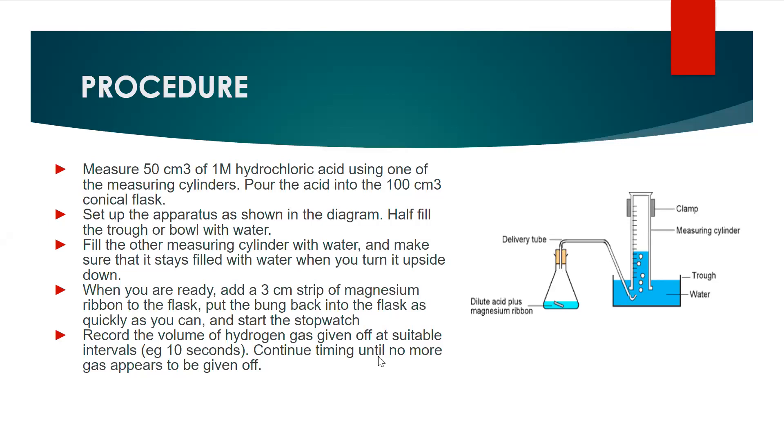Procedure: first of all we will measure 50 cm³ of 1M hydrochloric acid using one of the measuring cylinders, then pour the acid into the 100 cm³ conical flask, then set up the apparatus as you can see in the diagram.